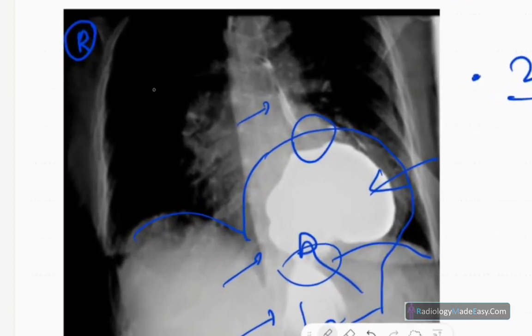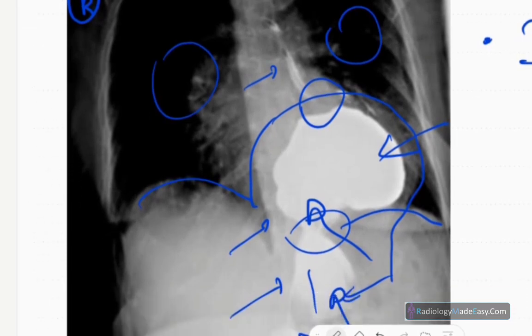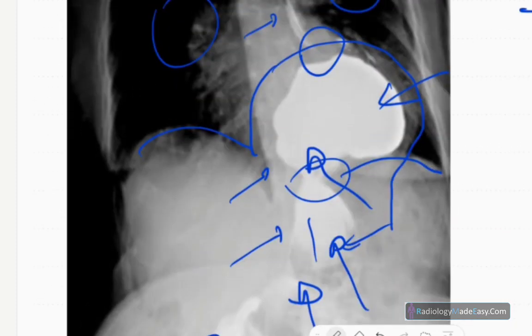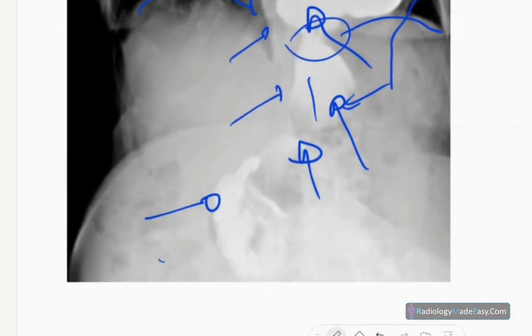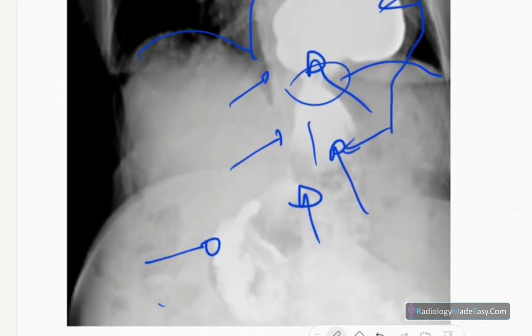There are no opacifications of lung fields and no contrast leakage into the mediastinum to suggest fistula tracts or perforations. Visualized bones are normal. You don't see any narrowing or abnormal dilatation in the esophagus, and no filling defects in the stomach to suggest neoplasms.